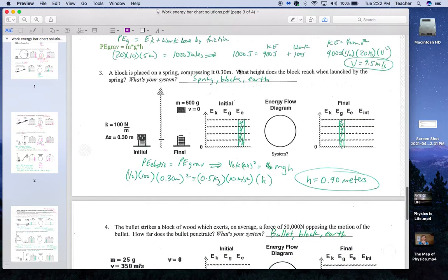This is a block that's compressed 0.3 meters. What height does it reach? So this is again similar to 1 in the first part. Elastic potential energy at the beginning equals gravitational at the end. 1/2 kx squared equals mgh. I get an h of 0.9 meters. All here, all here, no friction.